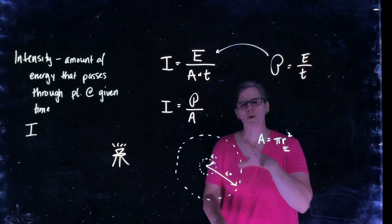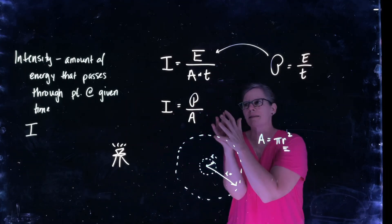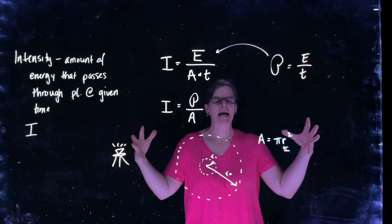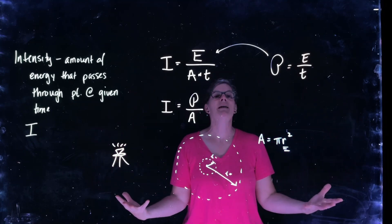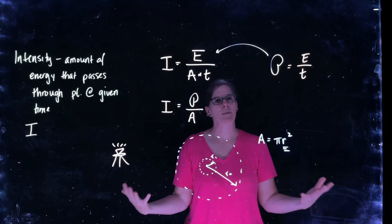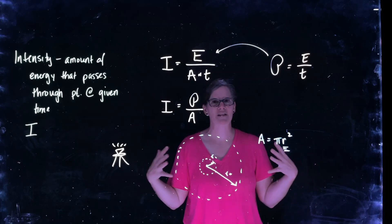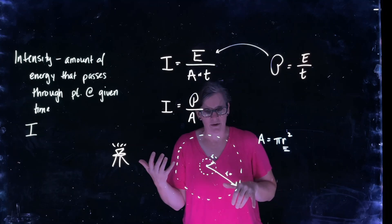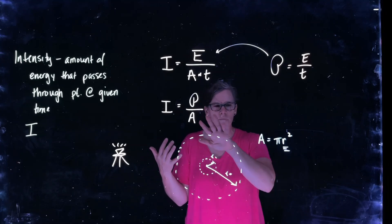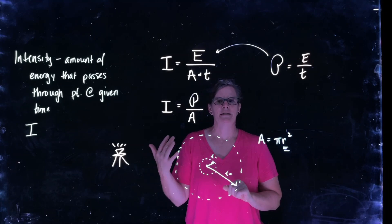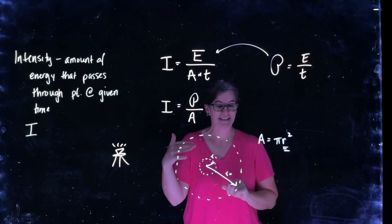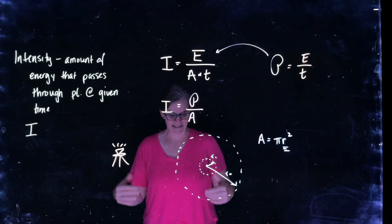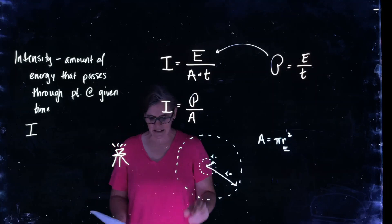So intensity, we're not going to go into a whole lot of detail, but I want you to understand that the intensity, how much energy I have from a source dissipates as I go out because now that energy per time is over a larger area. And so my intensity, my power, the amount of energy that passes through a point, this point versus that point, at a given amount of time, my power doesn't change, but because it's now spread out over an area, the intensity does. Okay, so intensity is important.